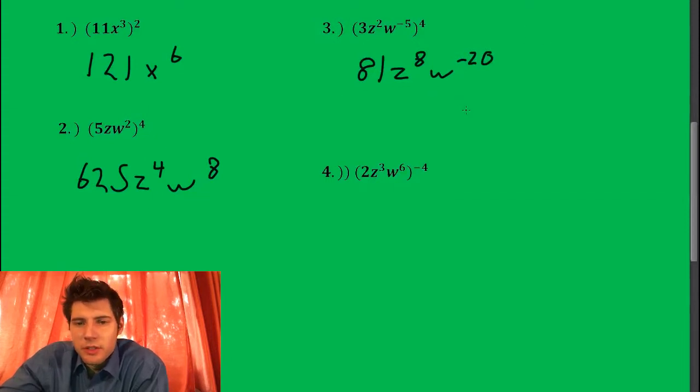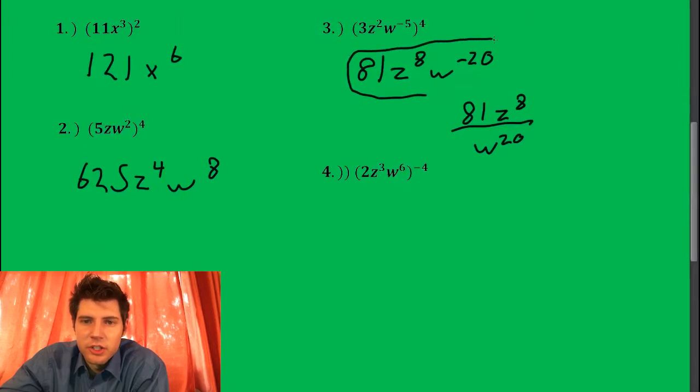Now if we want we can also rewrite this as 81 z to the eighth over w to the 20. Both of these are probably good answers depending on your teacher.